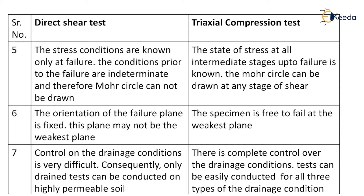The orientation of the failure plane in direct shear test is fixed. In direct shear test, the failure takes place only in the horizontal direction, i.e. at the center of the sample. This plane may or may not be the weakest plane. In triaxial compression test, the specimen is free to fail at any weakest plane.